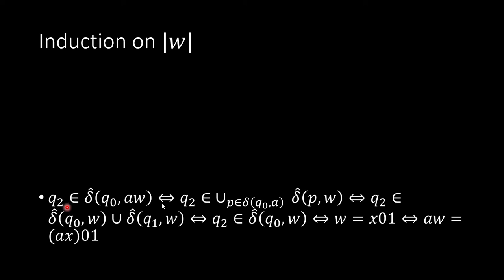Now, let's consider the statement. So if the condition q2 is in δ̂(q0, aw), aw has length n plus 1, and if only if q2 is in the union of p in δ(q0, a) and δ̂(p, w). So it depends on the value of a. If a is 0, then p could be q0 or q1. If a is 1, p is q0. So we have two possible choices. So it could be δ̂(q0, w) union δ̂(q1, w).